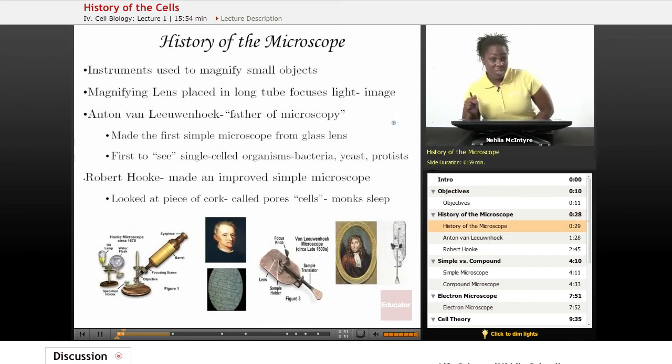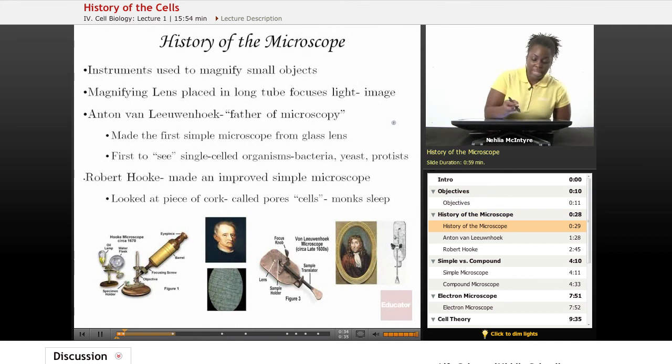Let's start by talking about the history of the microscope. The microscope is the instrument or tool used by scientists to magnify very small or microscopic objects, things we cannot see with the naked eye.